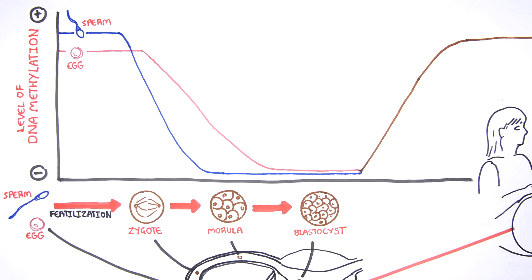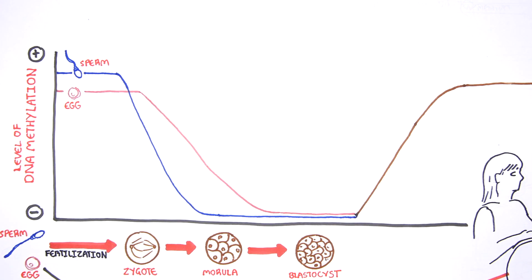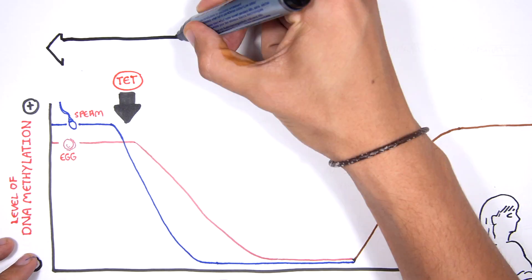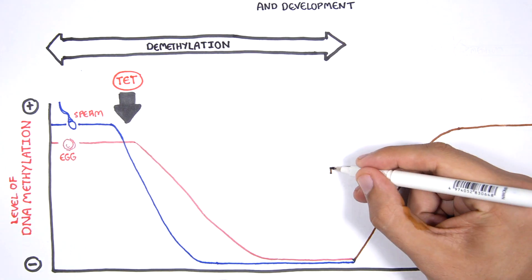The initial enzymes responsible for removing DNA methylation patterns from the maternal and paternal genomes are called TET. Methylation is carried out by DNMT enzymes.